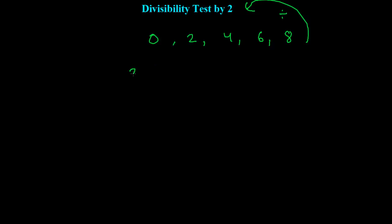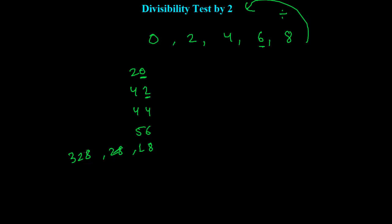For example, if you have 20, the ones place is 0. If you have 42, the ones place is 2. If you have 44, the ones place is 4. Something like 56, the ones place is 6. Something like 18, the ones place is 8. So numbers like 18, 28, 328, 56, or 106 — these kinds of numbers are all divisible by 2.